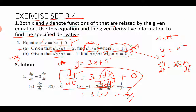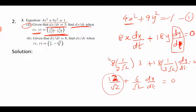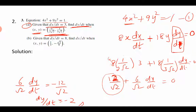Substituting all values: 8 × (1/(2√2)) × 3 + 18 × (1/(3√2)) × dy/dt = 0. Simplifying: 12/√2 + 6/√2 × dy/dt = 0. Taking the first term to the right side: 6/√2 × dy/dt = −12/√2. The √2 cancels, and dividing both sides by 6 gives dy/dt = −2. So the rate of change of y with respect to t is −2.